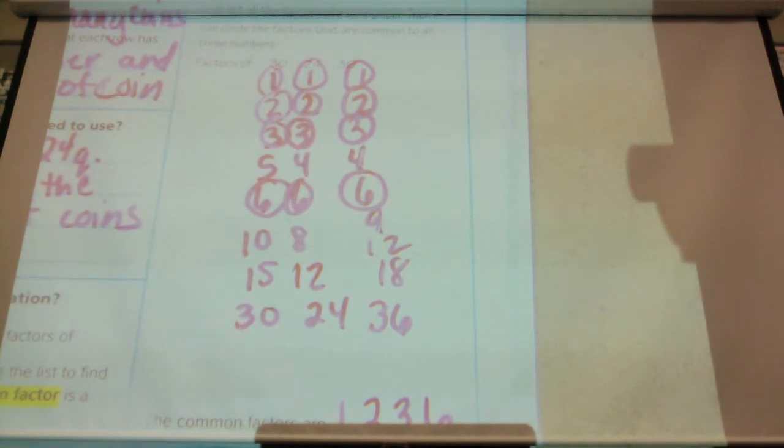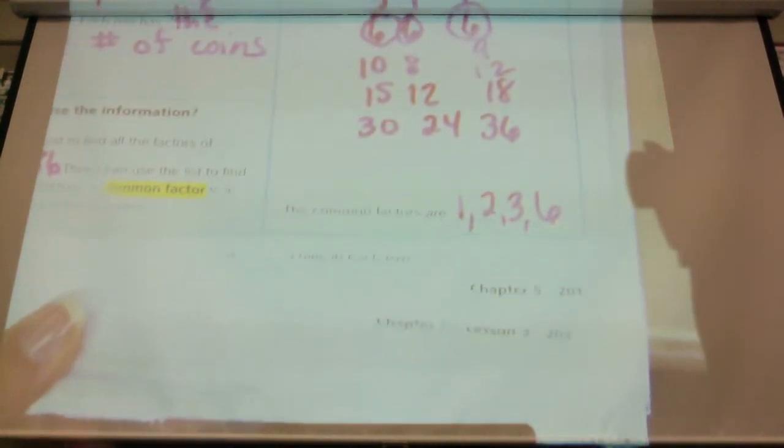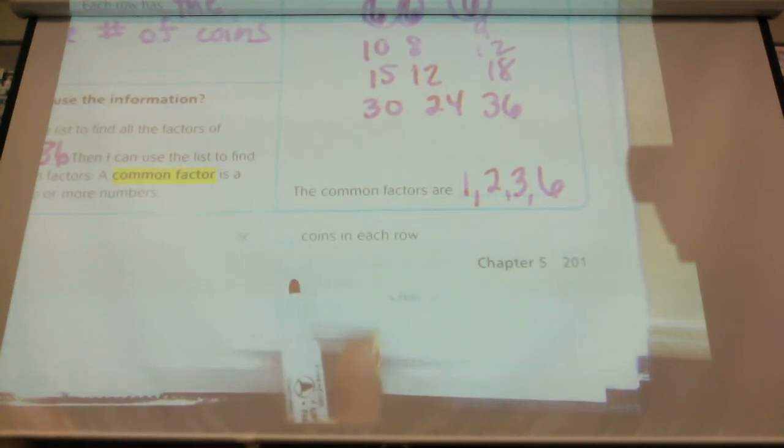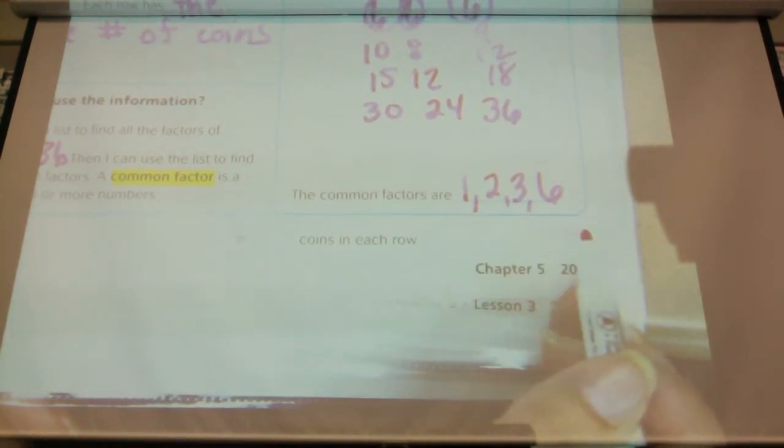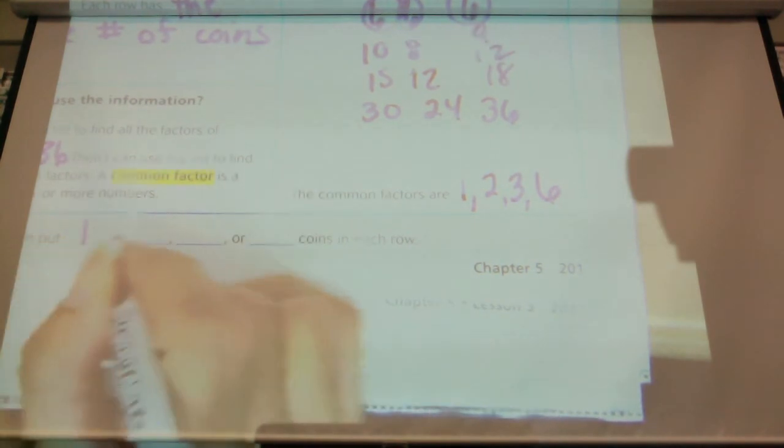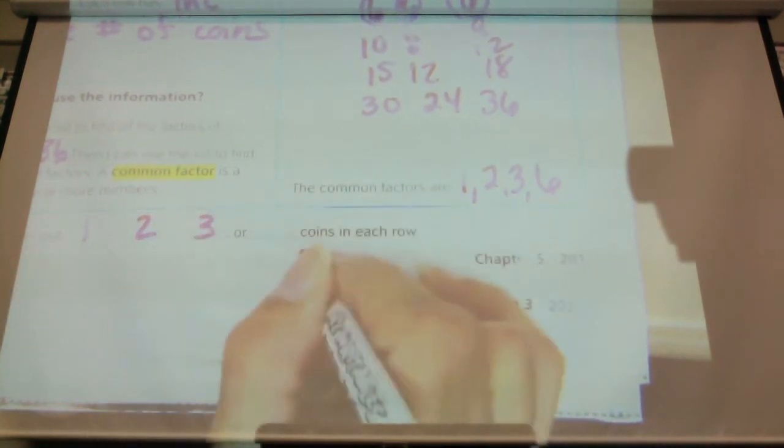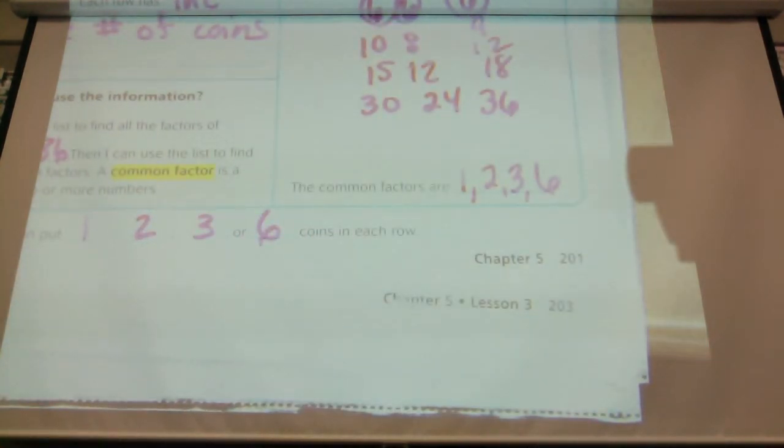So our common factors are, help me, one, two, three, six. Okay, going back to the question, does it say the greatest common factor or the least common factor, the highest, the lowest, nothing, right? It says how many coins can he put in each row. We have a couple different choices. So look, there's four lines down here. Oh, we had how many common factors? So we would put those right here: one, two, three, or six in each row. We can make rows of one, which we probably wouldn't do, but we can make rows of two, we can make rows of three, or we can make rows of six and have it work out all nice and even. Go ahead and copy all that down.